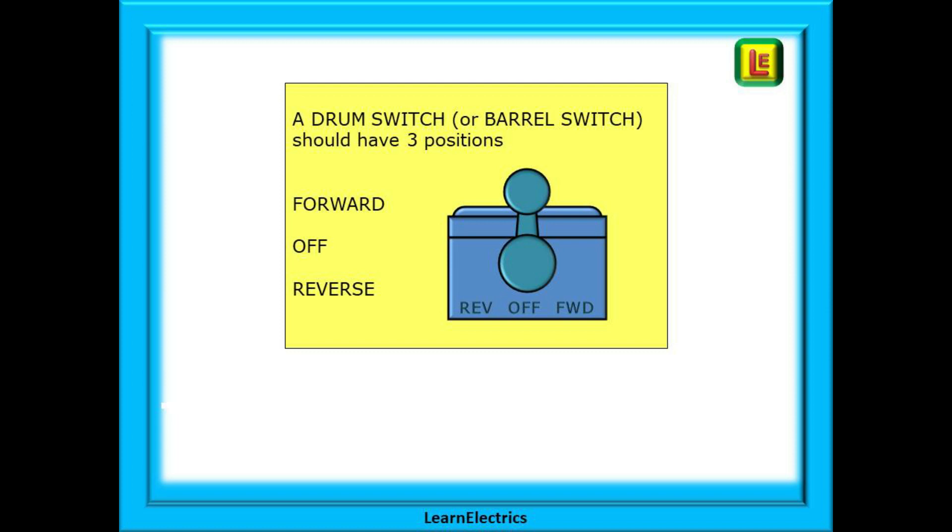Drum switches or barrel switches come in many types and styles but they should all have three switch positions and these are forwards and reverse and of course an essential off position.